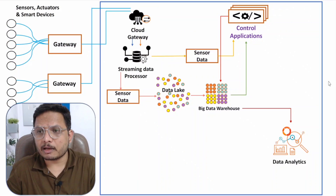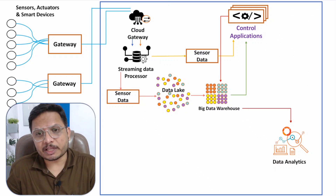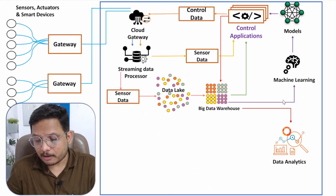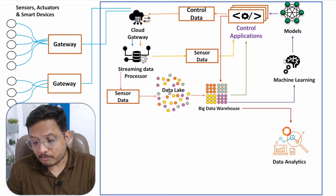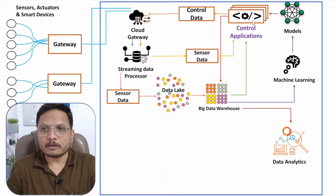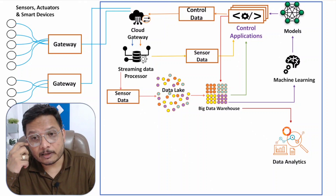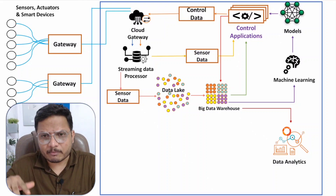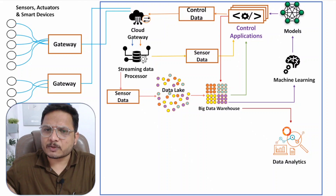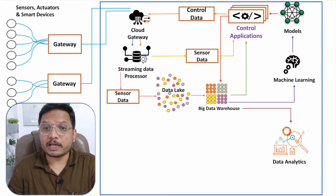The next block involves machine learning, deep learning, or artificial intelligence. Using algorithms, machine learning models are built to optimize applications. These models can be updated over time, making automation increasingly efficient.